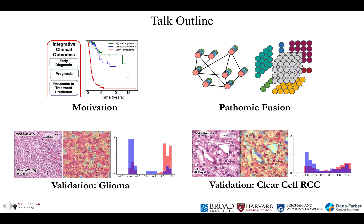The rest of my talk is outlined as follows. First, I will be discussing the motivation behind fusing histology and genomics. Then, I will be discussing the method Pathomic Fusion. Finally, I will be discussing how I validated Pathomic Fusion on glioma and clear cell renal cell carcinoma in the Cancer Genome Atlas Consortium, also known as the TCGA.